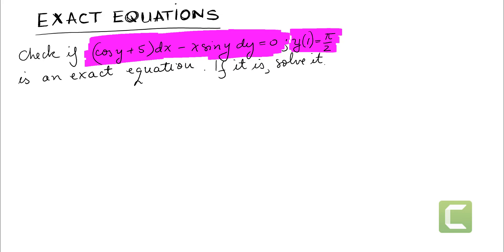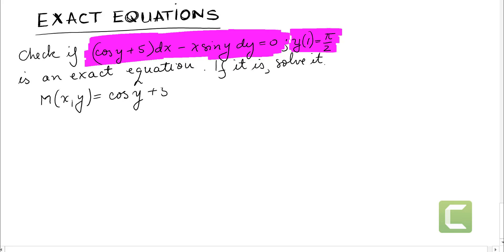It's an exact equation if it is solved. So the very first thing is to identify what M of x, y is — M of x, y is the function that we multiply by dx, so it's cosine of y plus 5. And N of x, y, a function of two variables, is negative x sine of y, which is the function that we multiply by dy.